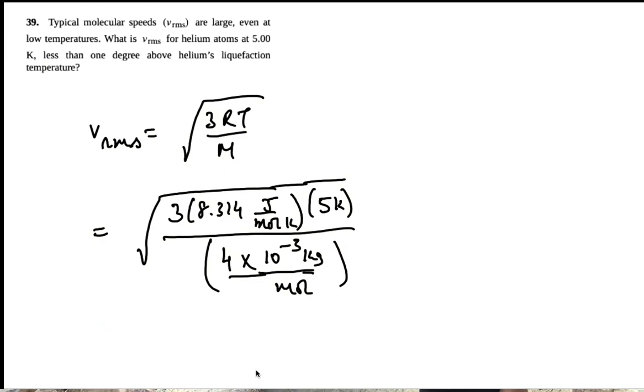So this would be, let's take care of powers of 10. This would be 40 times 10 to the minus 4. 10 to the minus 4 coming to the top becomes 10 to the plus 4. Square root of that would be 10 to the 2.